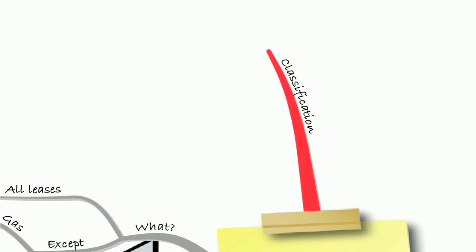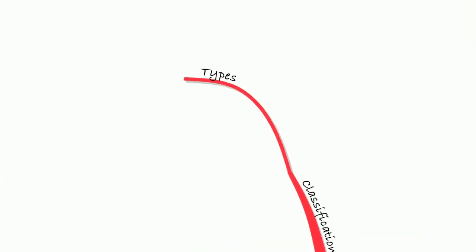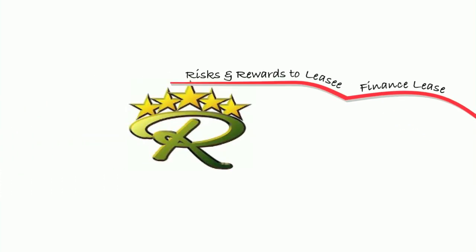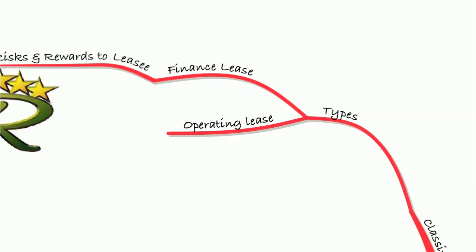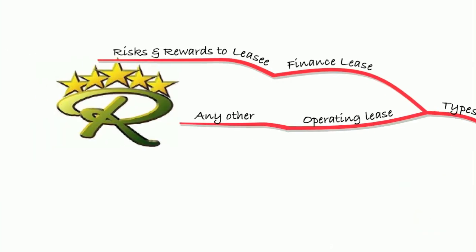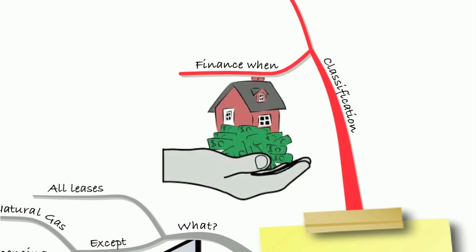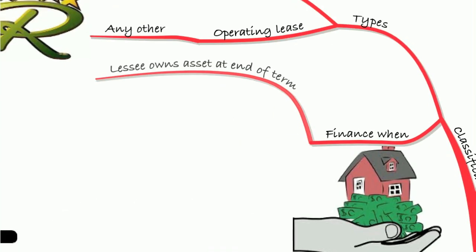Classification of a lease: there are two types. A finance lease is where the risk and rewards of ownership transfer to the lessee — the person leasing the asset. An operating lease covers all others. To decide which is which, if a lease meets any of the finance lease criteria it will be a finance lease; if not, it will be an operating lease.